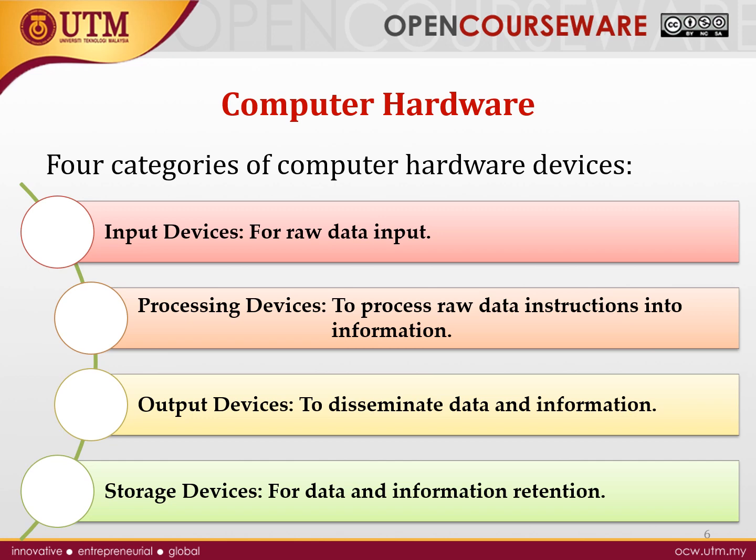Processing devices convert raw data and instructions into information that we can see and hear. Then we have output devices — devices that allow us as humans to understand and perceive. For example, we can see images because of the processing the computer did and then displays the picture that way.